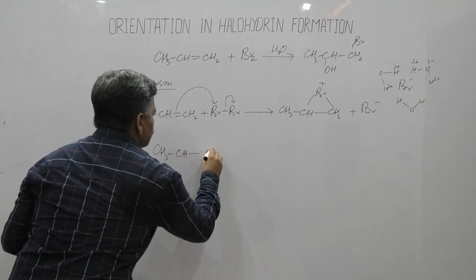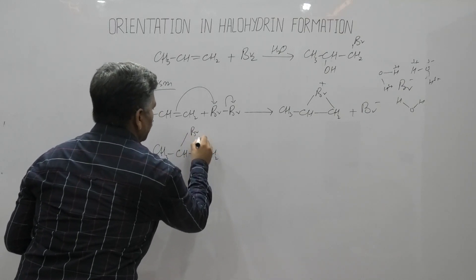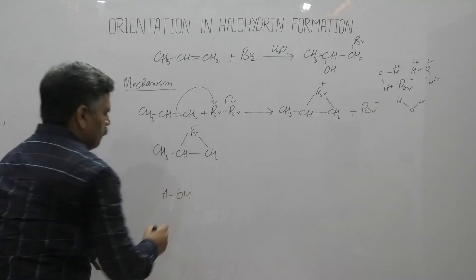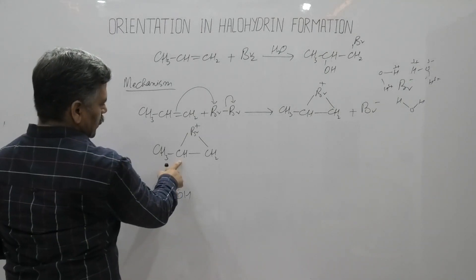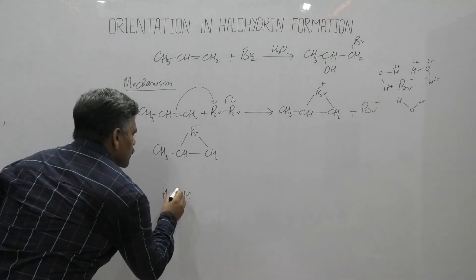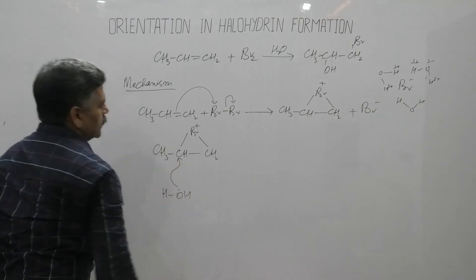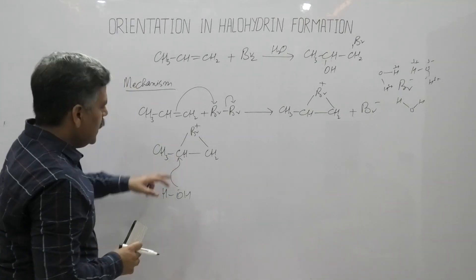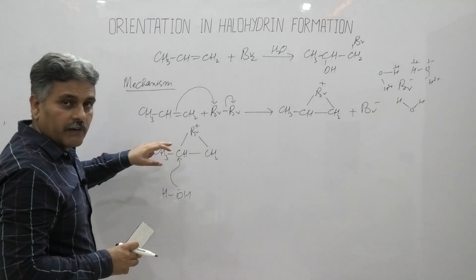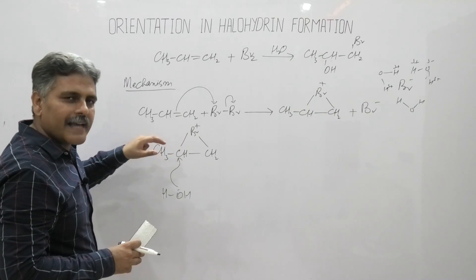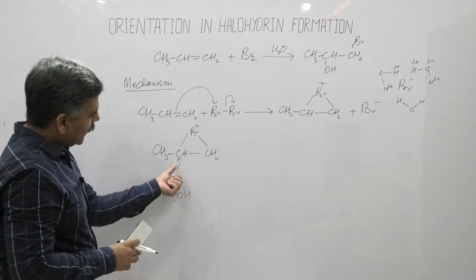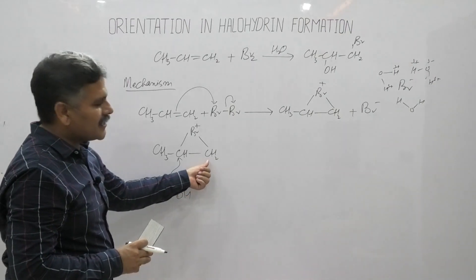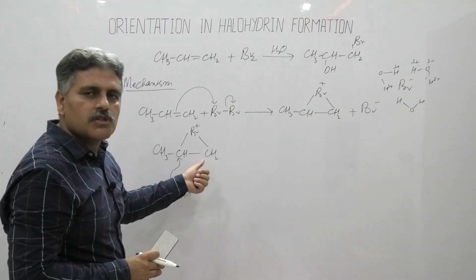In the intermediate CH₃-CH⁺-CH₂Br, the hydroxyl group of water, being nucleophilic, can attack the central carbon or the terminal carbon. When hydroxyl attacks the central carbon, it gives a more stable transition state because the positive charge there represents a secondary carbocation. This gives a more stable transition state compared to hydroxyl attacking the terminal carbon, which gives a less stable transition state.